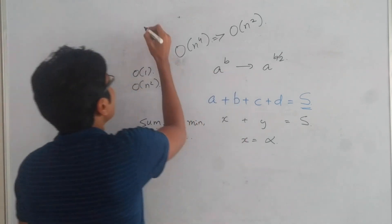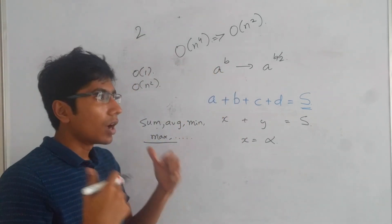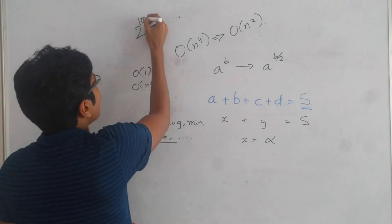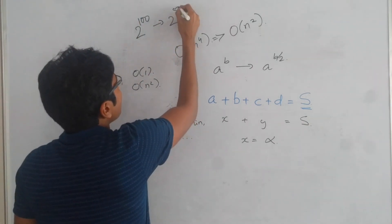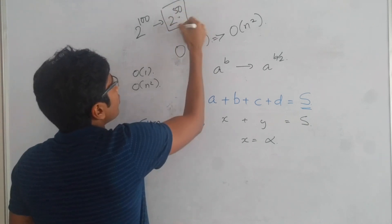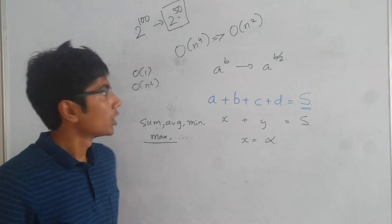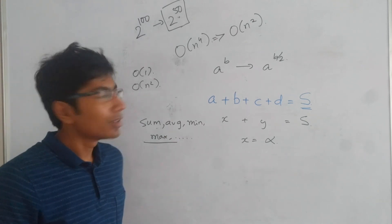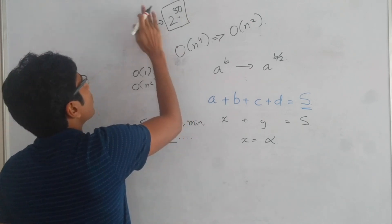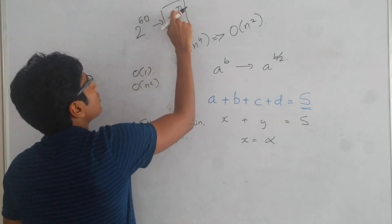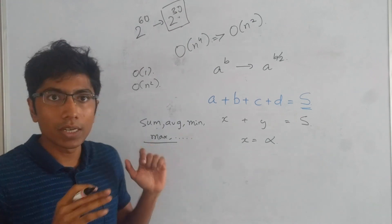A raised to power B has to be pretty small for you to benefit from bringing it down to A raised to power B/2. If A is 2 and B is 100, that's 2 raised to power 100 — even if you bring the complexity down to 2 raised to power 50, this cannot be computed by modern computers. Meet in the middle is more sensible when B is somewhere around 60, so you can bring it down to just 30, and that can be computed in approximately 1 second.